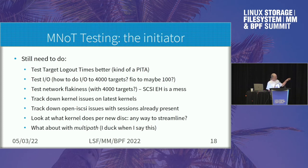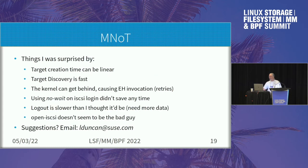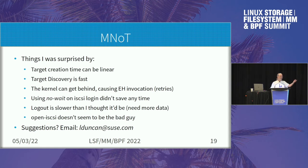One thing that surprised me is how much I/O occurs when you get a new disk. It's fine for a single disk, but when you get a thousand new disks, it's overwhelming — it has to read the partition table, enable caching, check to see if certain SCSI commands are supported. Also, about a year ago I hooked up some code in open-iSCSI that Mike Christie originally created but didn't use — for no-wait. It allows you to log into a target but not wait for the response. I thought that would be faster, and it wasn't. So I want to find out why.